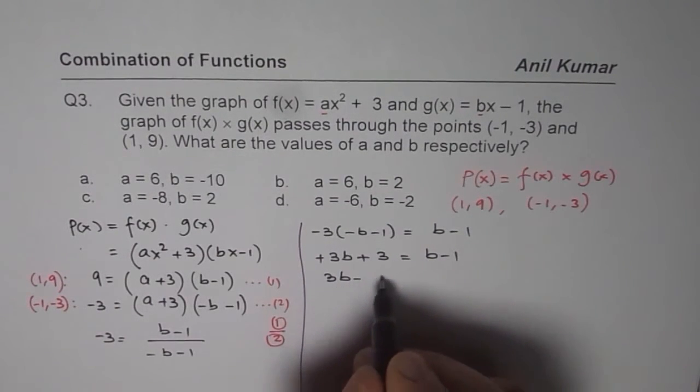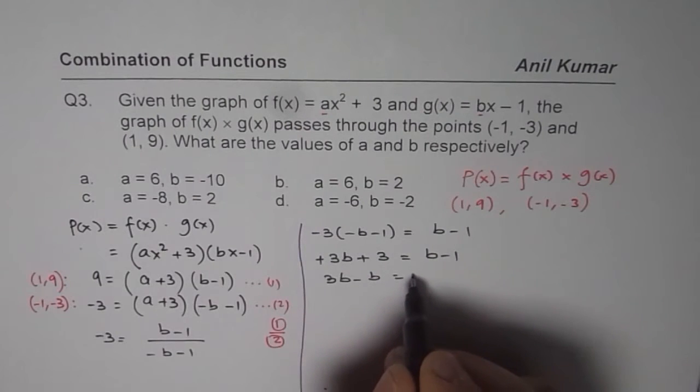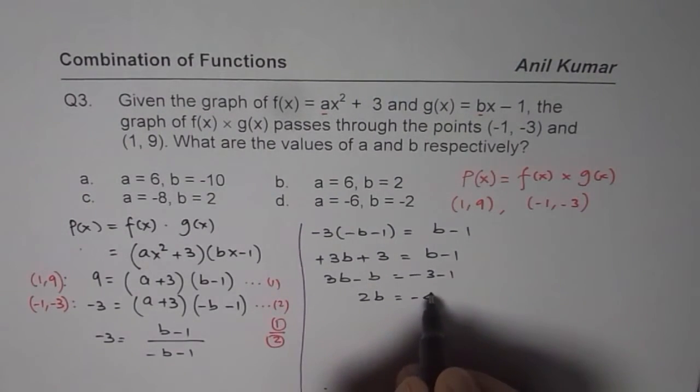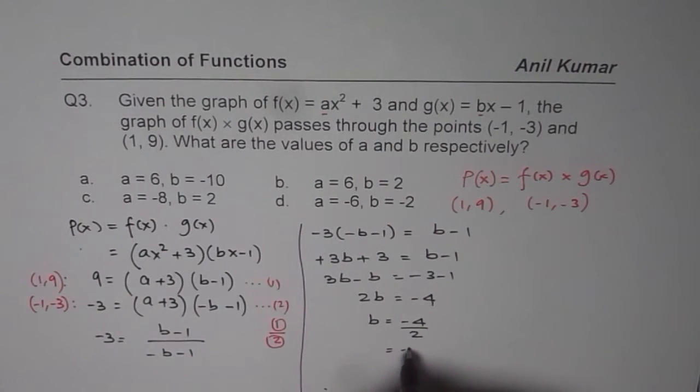Bring the b's together and the constants to the right side. So, minus 3 minus 1. 2b equals minus 4 or b equals minus 4 divided by 2, which is minus 2.